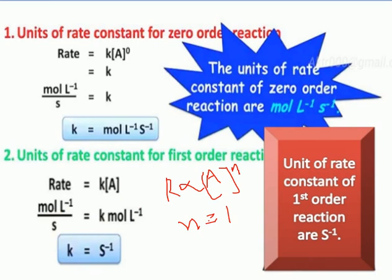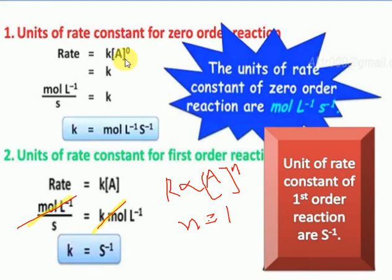Moles per litre in numerator and denominator cancel out, so what remains is second inverse only. The units for the first-order reaction rate constant are second inverse only. Also remember, when N equals zero, A to the power of zero is 1, so rate equals K, and K has units of moles per litre per second inverse.